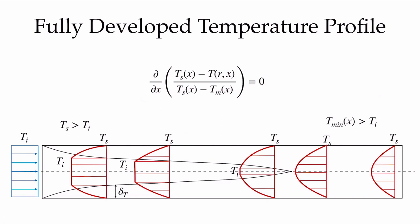If we achieve a fully developed temperature profile, the temperature profile is still changing as energy is added or removed, but fully developed means the non-dimensional temperature profile is not changing with distance once we reach that condition. The non-dimensional temperature gradient at the wall is therefore not changing with x, and so the Nusselt number is not a function of x — it is a constant everywhere in the fully developed flow regime.